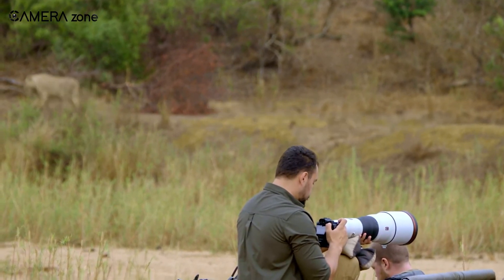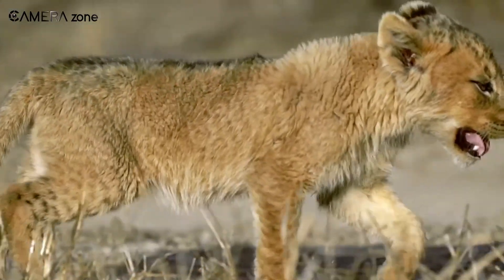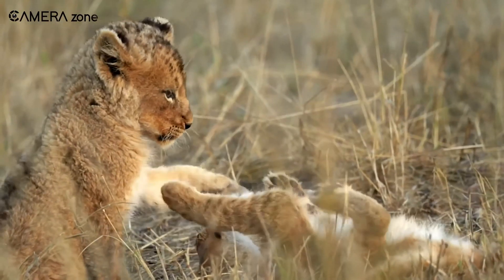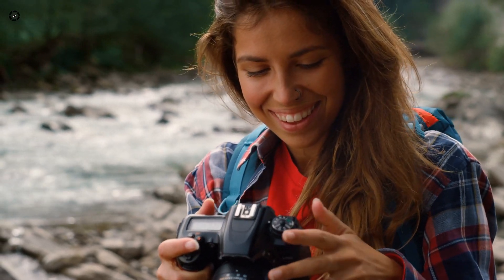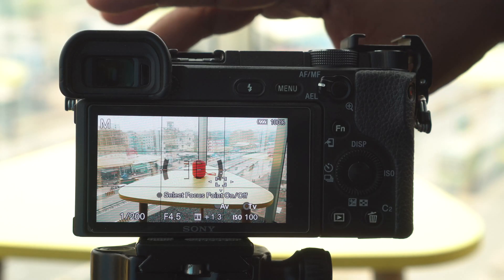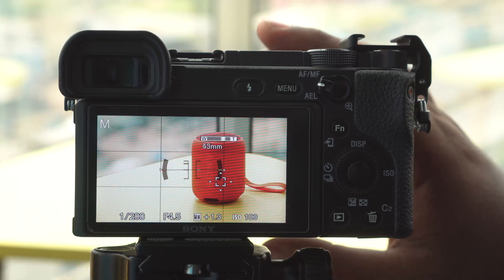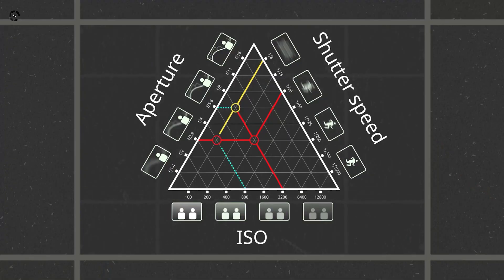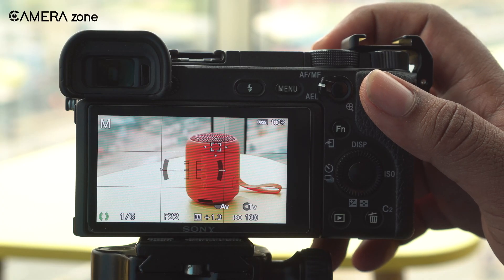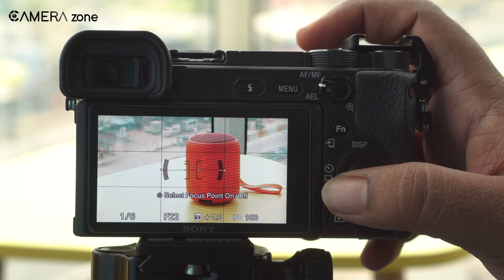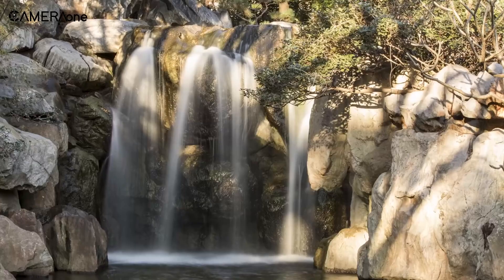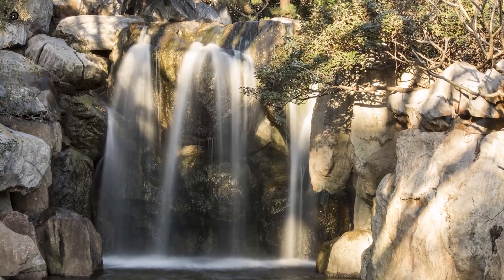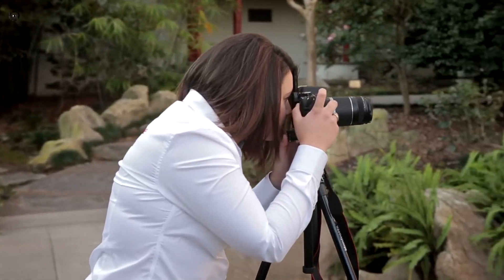A stunning picture is not only about a perfect moment and a perfect environment — it is also about how well you are at the basics of a camera. Getting the exposure right is the key to every breathtaking image, and exposure is all about juggling the exposure triangle. In this video we are going to discuss how to get the perfect exposure using the exposure triangle so that every image you click becomes a masterpiece.